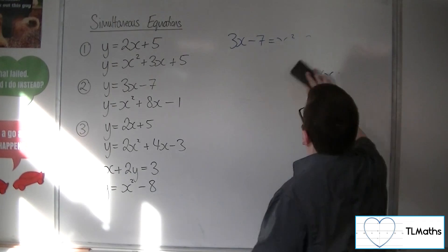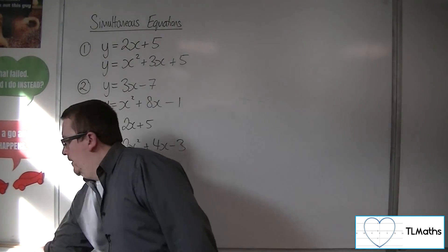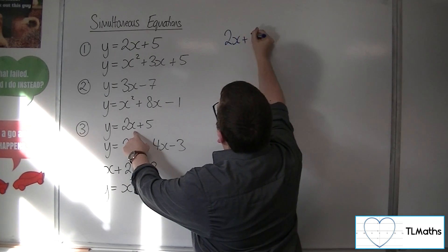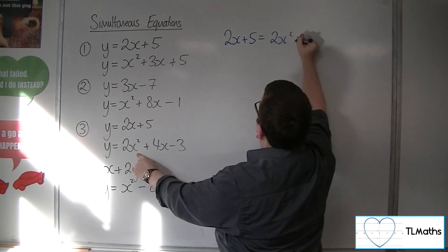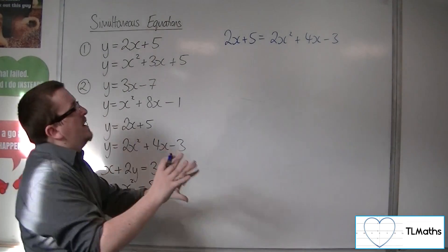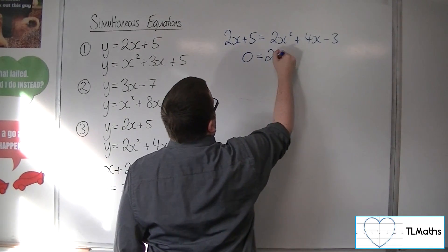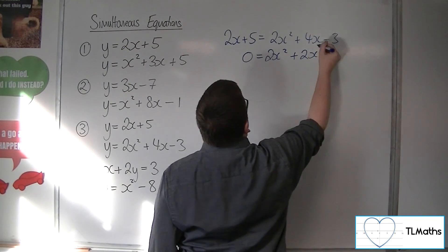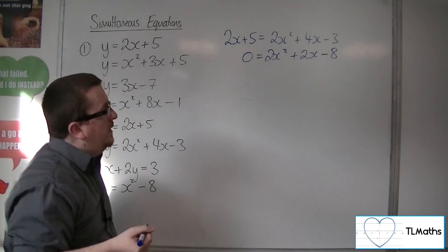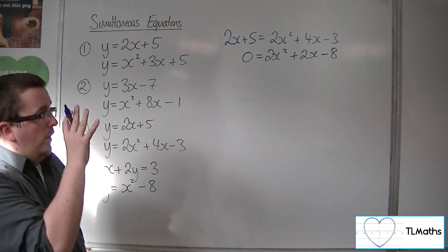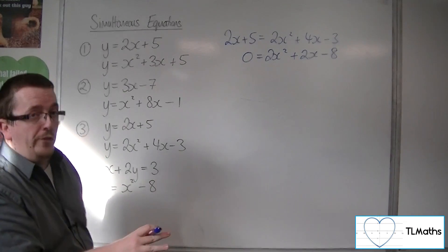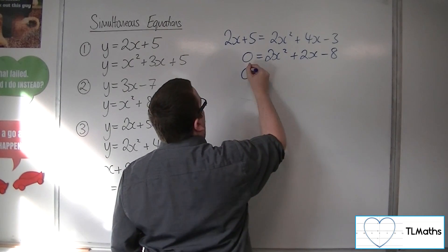For number 3, we've got y equals 2x plus 5, so 2x plus 5 is going to equal 2x squared plus 4x minus 3. Throwing everything onto the right-hand side — subtracting 2x from both sides and taking away 5 — gets us down to minus 8. I notice that all the coefficients have a factor of 2, so I can divide through by 2 to simplify.